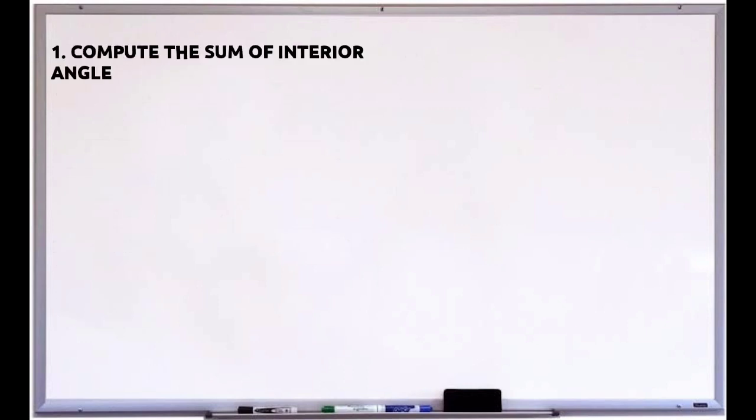The first step is to compute the sum of the interior angle. I know that you are familiar with the formula of the sum of the interior angle. The formula for the sum of the interior angle equals 180 times the quantity N minus 2. N represents the number of sides. Since it was mentioned in the problem that interior angles of the triangle, it means that the sum of the interior angles is 180 degrees.